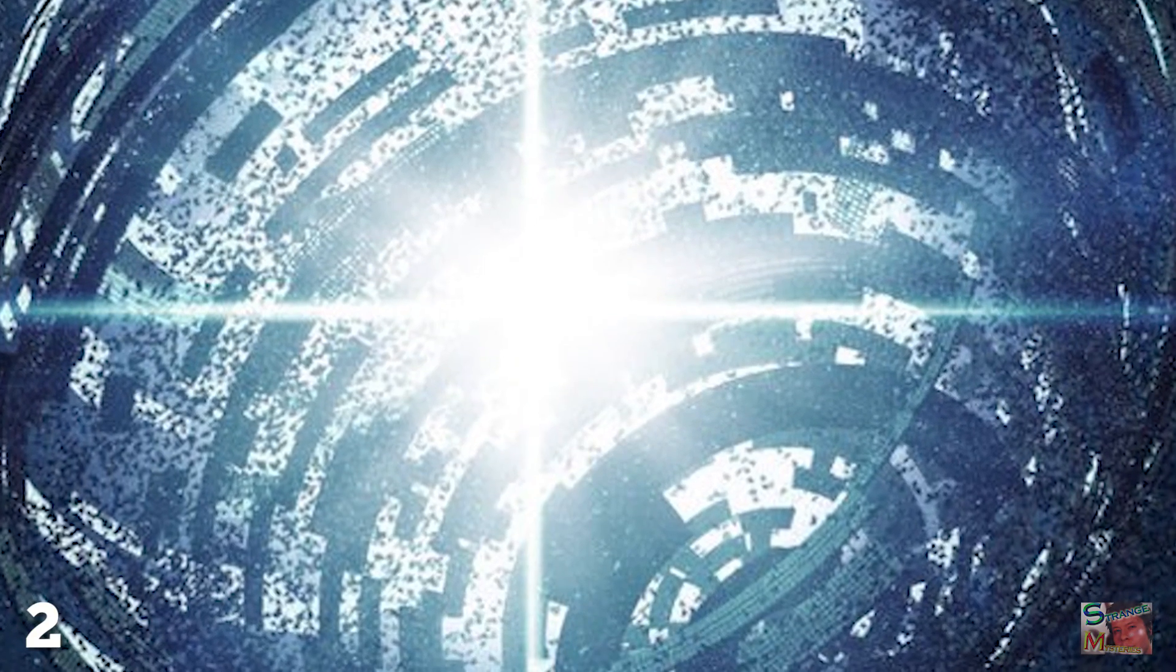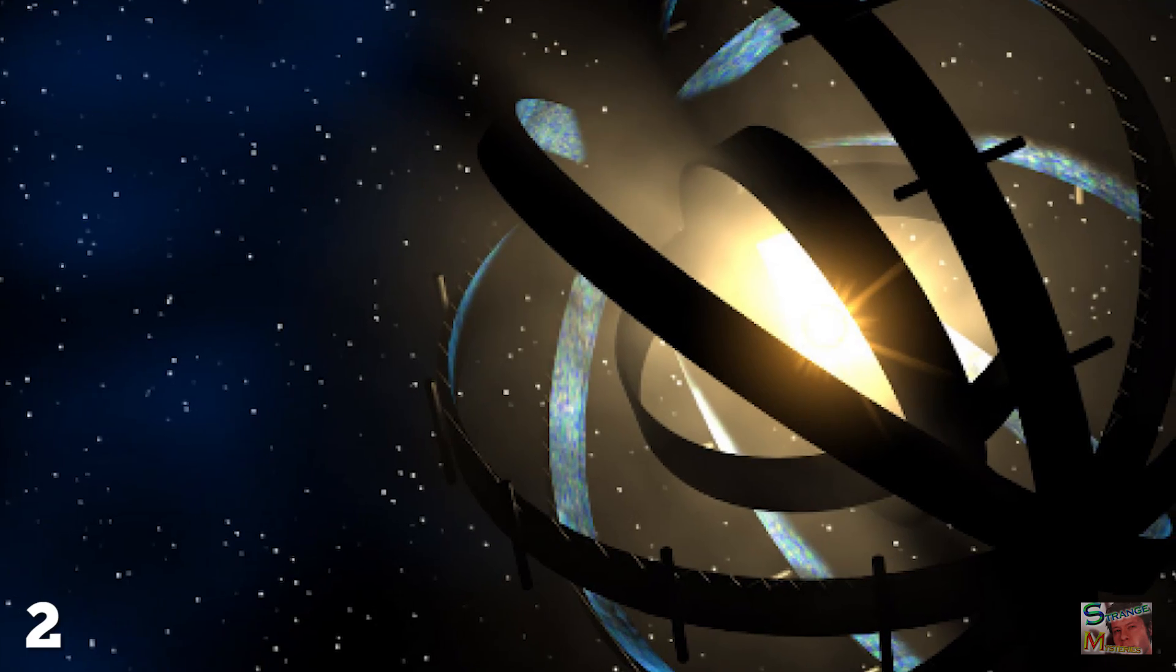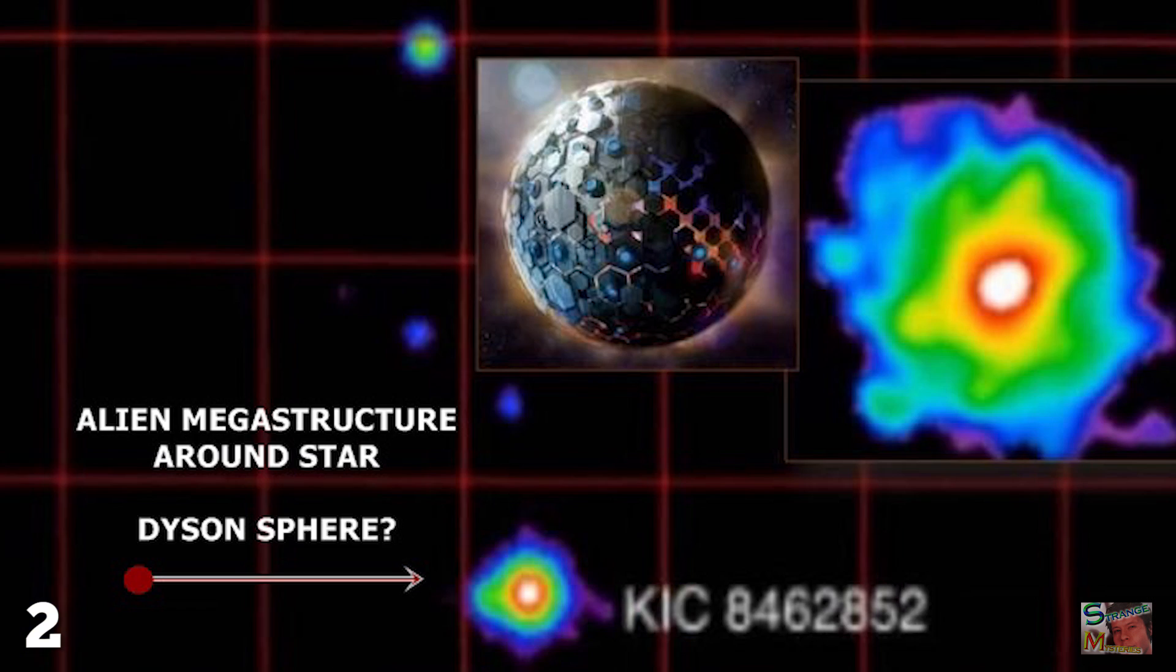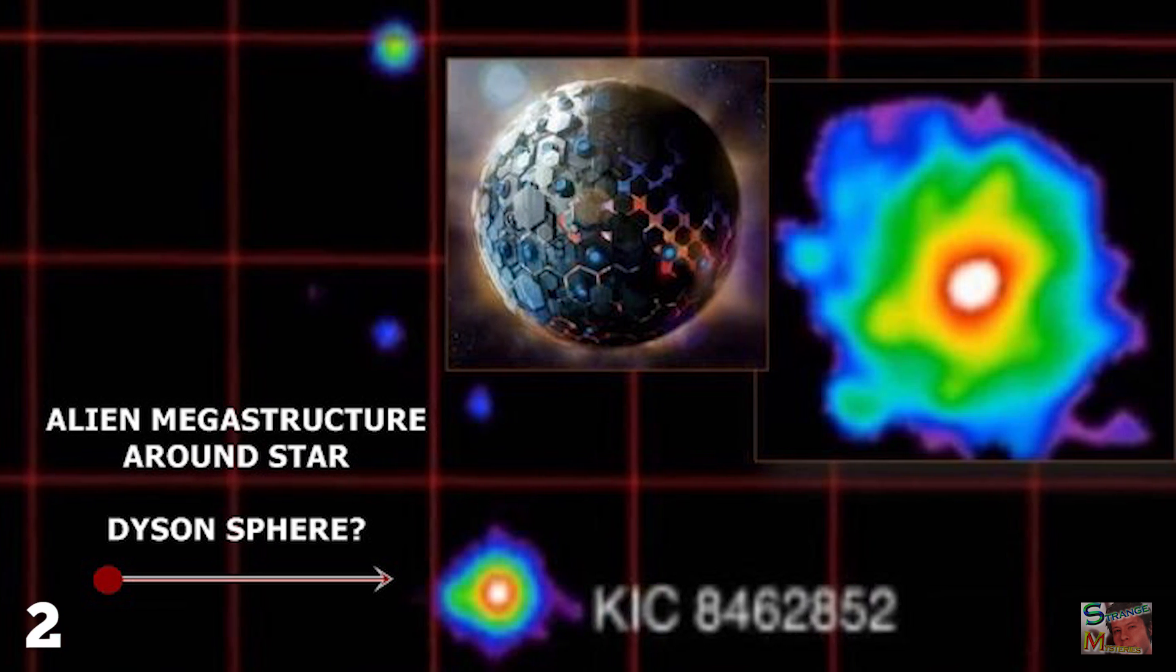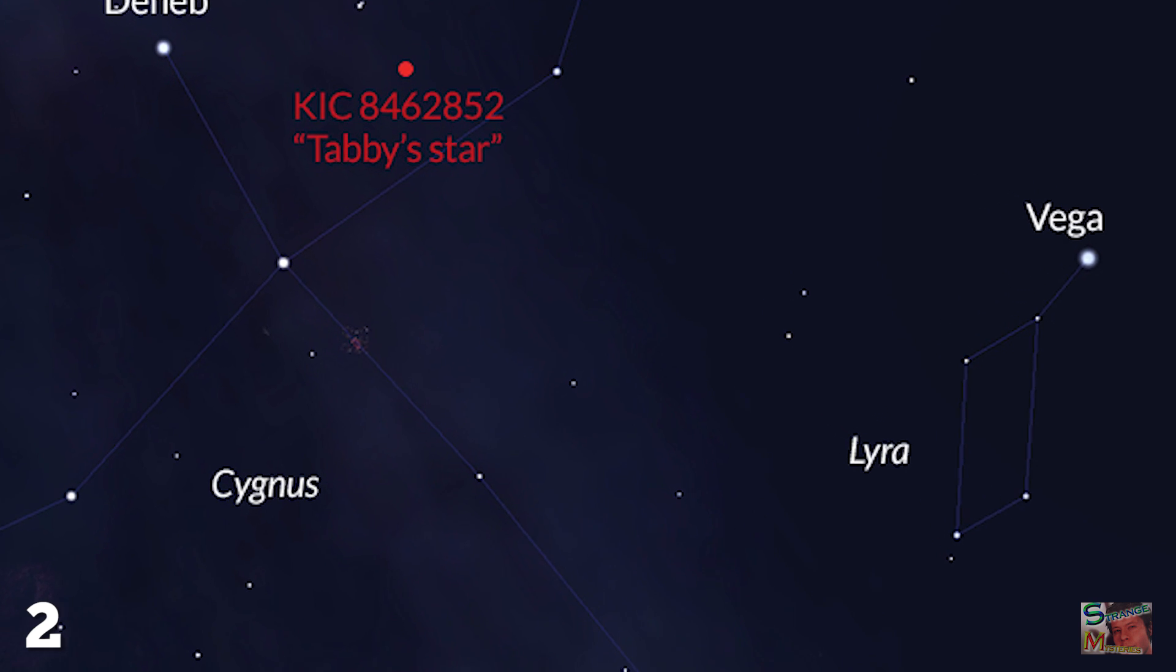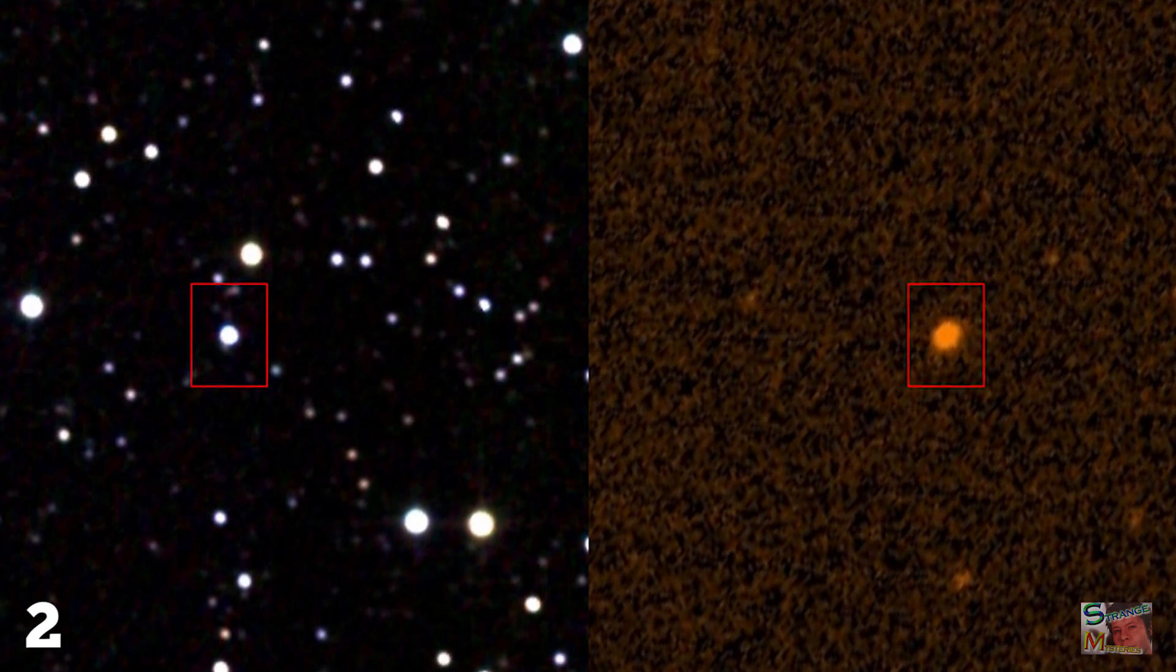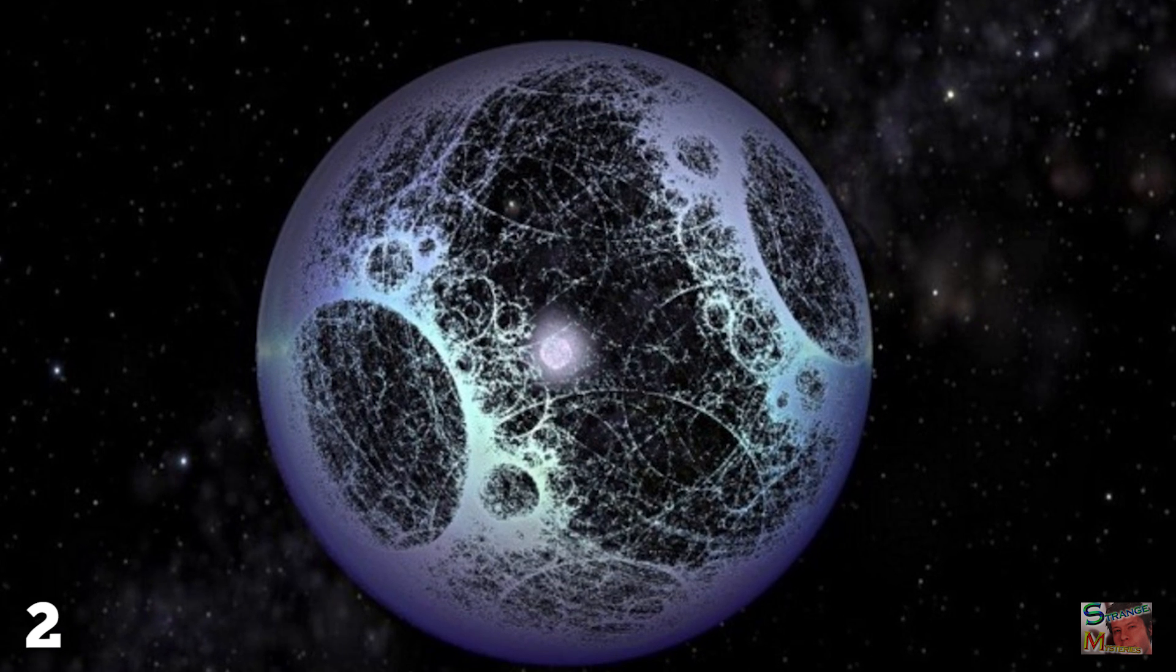They might do so using the theoretical Dyson sphere. Dyson spheres are theoretical large structures which can encompass a whole star, and we think we may have seen one being built. In 2016, remember the story about Tabby's star, whose dips in brightness could not be explained by science? That might have been an advanced civilization in the process of building a Dyson sphere.